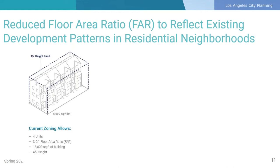In this example, we look at a 6,000 square foot lot and compare what can be built under the existing and proposed regulations compared to what the current built conditions are throughout the neighborhood. This first diagram represents the development potential under the current zoning conditions. Current zoning allows for a maximum of 4 units, a maximum of 18,000 square feet of building floor area, and a height limit of 45 feet. Because of the current FAR allowance, this could yield very large units if built out to the maximum floor area, or FAR.